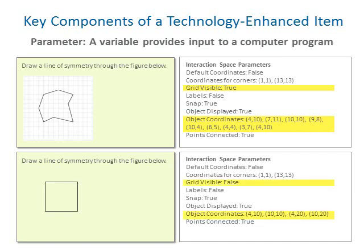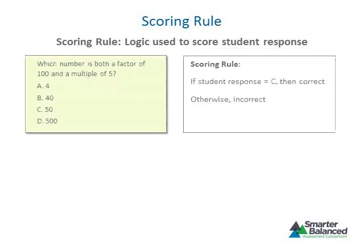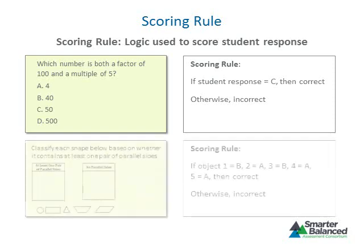By adjusting the values for each interaction space parameter, you can use a single technology-enhanced item type to create a wide variety of items. For example, for one item the grid is set to not visible and the object coordinates have been changed to form a rectangle. All technology-enhanced items have a scoring rule that provides directions to the computer about the logic to be followed to score a response. In some cases an item will have only one correct response; in others there may be many possible correct responses. The scoring rule for a selected response item states that if the student's response matches the correct response, the student receives one point; otherwise, zero.